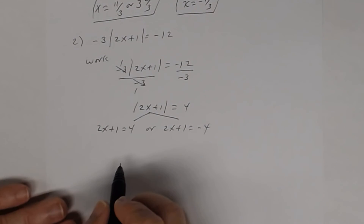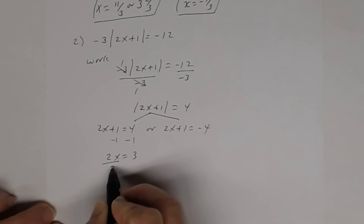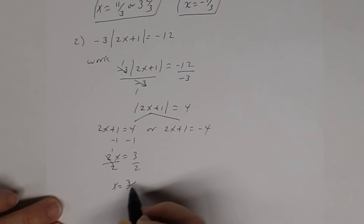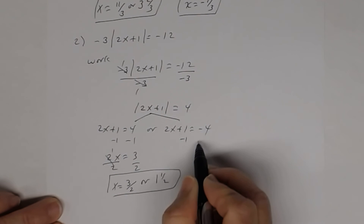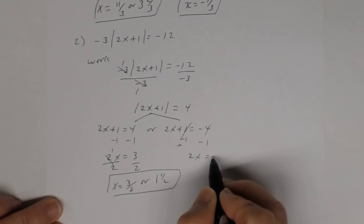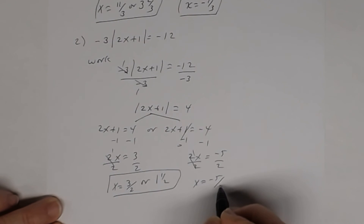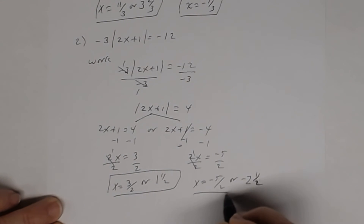It's just a matter of getting x by itself. Subtract 1 from both sides: 2x equals 3. Divide both sides by 2: x equals 3 halves, or 1 and 1 half. For the other equation, subtract 1 from both sides: 2x equals negative 5. Divide both sides by 2: x equals negative 5 halves, or negative 2 and 1 half.